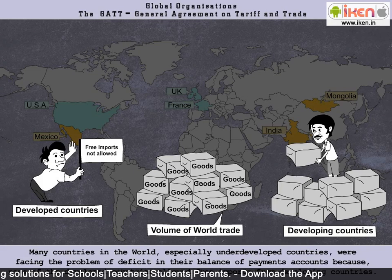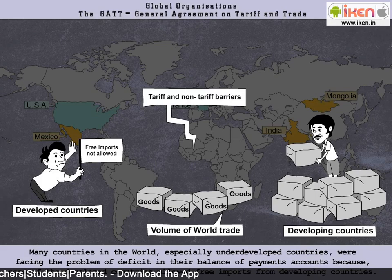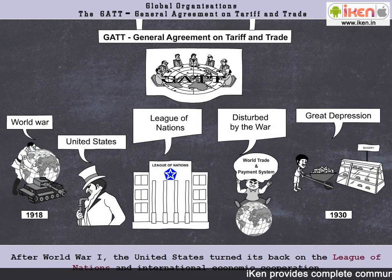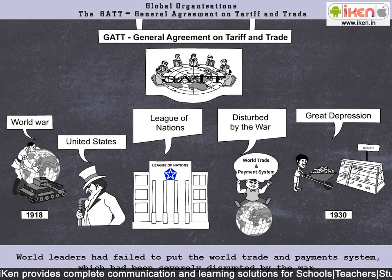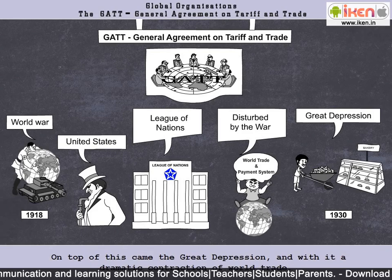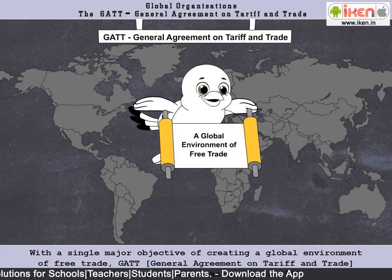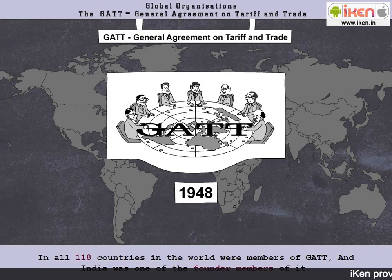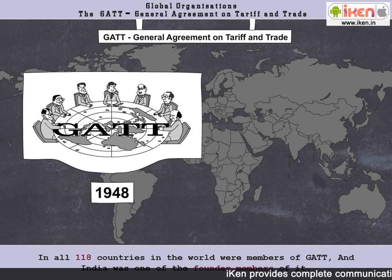Tariff and non-tariff barriers to trade reduce the volume of world trade. The origins of GATT can be found in the economic disaster of the interwar period. With a single major objective of creating a global environment of free trade, GATT — General Agreement on Tariff and Trade — a global organization, was set up in 1948. In all, 118 countries in the world were members of the GATT, and India was one of the founder members of it.